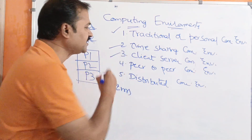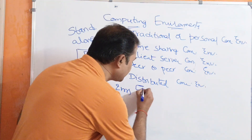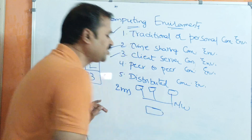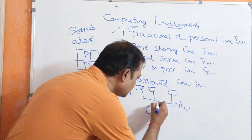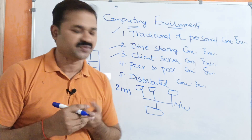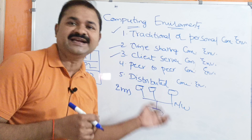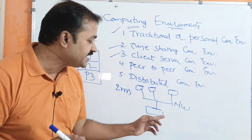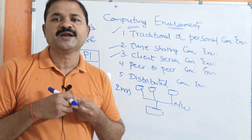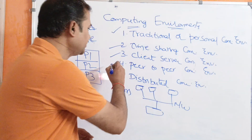The third one is client-server computing environment. Here we have multiple clients connected over a network with a server. The client is a dummy component — it doesn't have any data — whereas the server is very powerful and has a large amount of data. If a client needs some data, the client sends a request to the server. The server receives the request, processes it, and provides a response to the client.